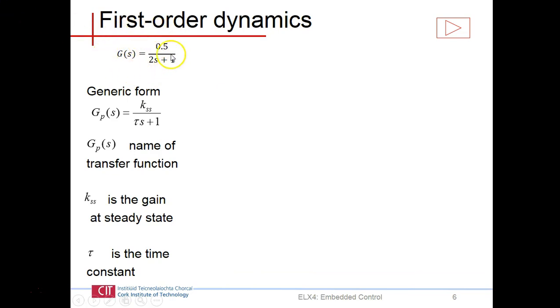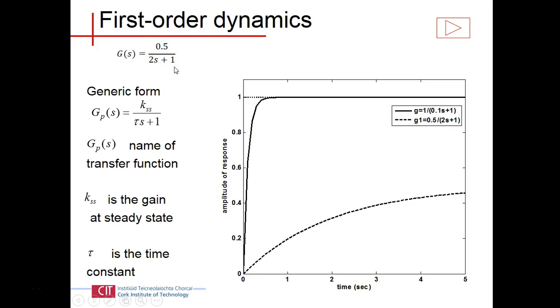The sorts of transfer functions we're going to be getting will look something like this: you're going to have a number on the top, for example 0.5, a number here in front of the s which is representative of the time constant. The form is 0.5 over 2s plus 1. That's what you can expect to come up with. The challenge is to figure out what's your version of the 0.5 and your version of the 2. The generic form or standard form for a first order transfer function: kss is the gain at steady state or the steady state gain. For this example, the gain is 0.5. The second parameter we need to figure out is tau, the time constant.